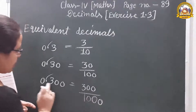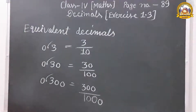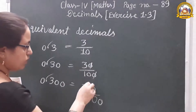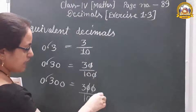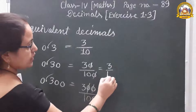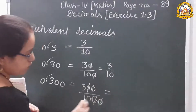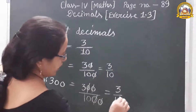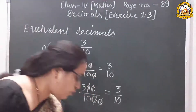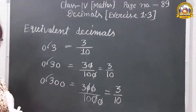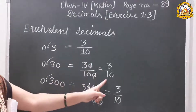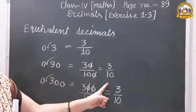Because after the decimal there are three digits. Now, the one zero cancels with one zero, and two zeros cancel with two zeros. What remains? 3 upon 10. Here also 3 upon 10, and here already 3 upon 10. So from all three steps we get 3 upon 10.